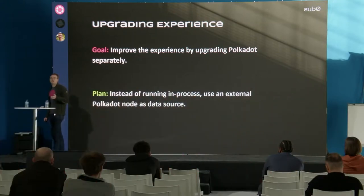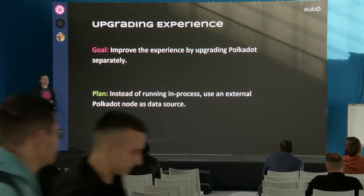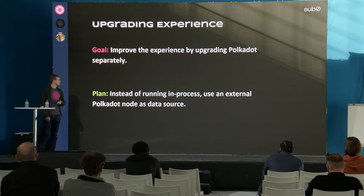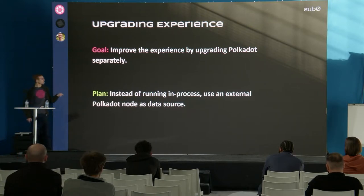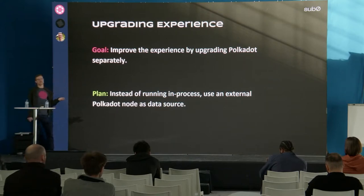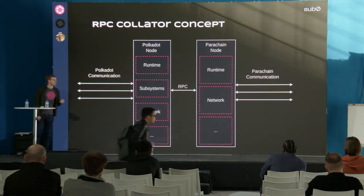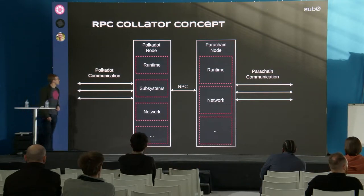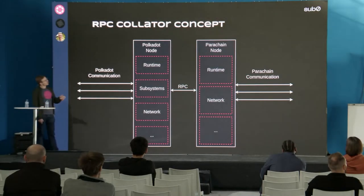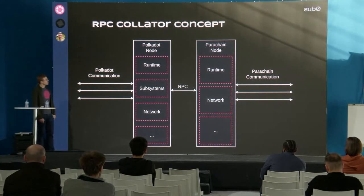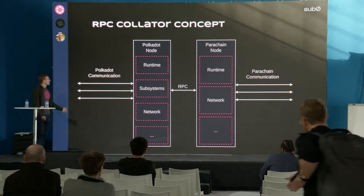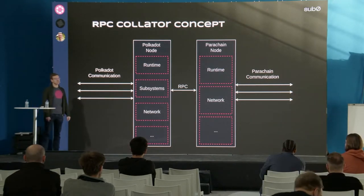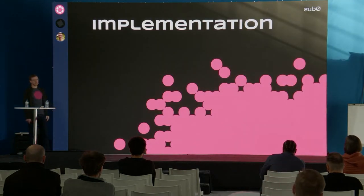The idea is to refactor the node so that the Polkadot upgrade can actually be done by just replacing the Polkadot binary and not having to touch the collator at all. Instead of running the Polkadot node in-process, we would run it outside as a data source for our collator. From a naive perspective this could look something like this: on the left we have the Polkadot node with all its components, on the right we have the parachain node — they are separate processes — and in between we just exchange some data via RPC. We will discuss the implementation details and considerations in the next chapter.